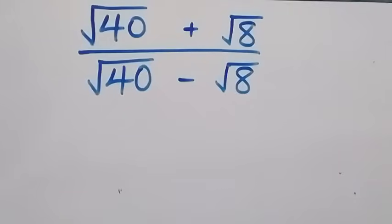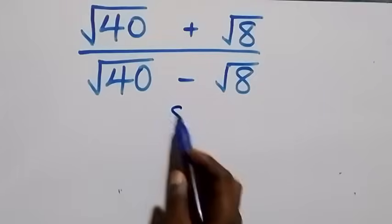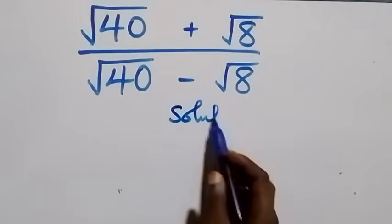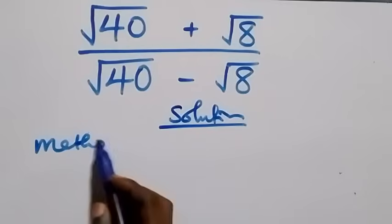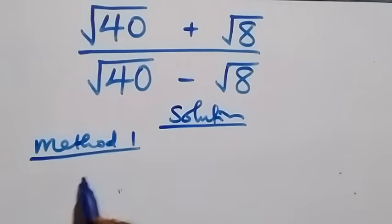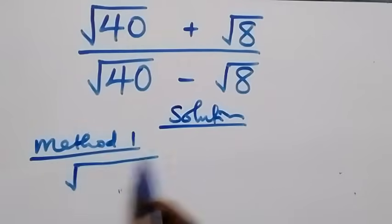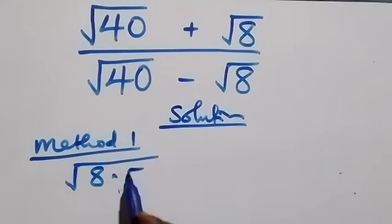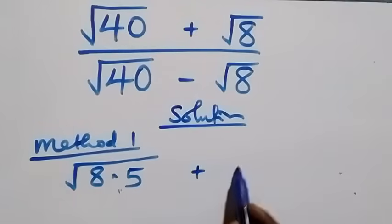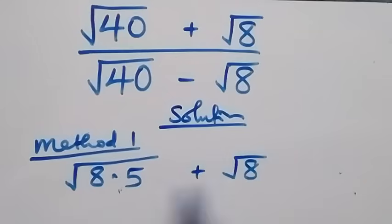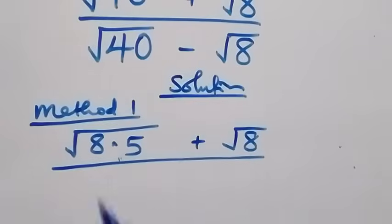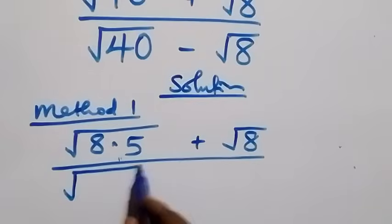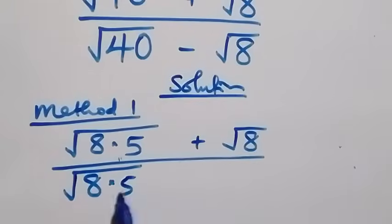Hello, you're welcome. How to solve this nice square root problem. From what we have here, we can write this as root of eight times five, plus root eight, over root of eight times five, minus root eight. We have two methods here; the first method begins here.